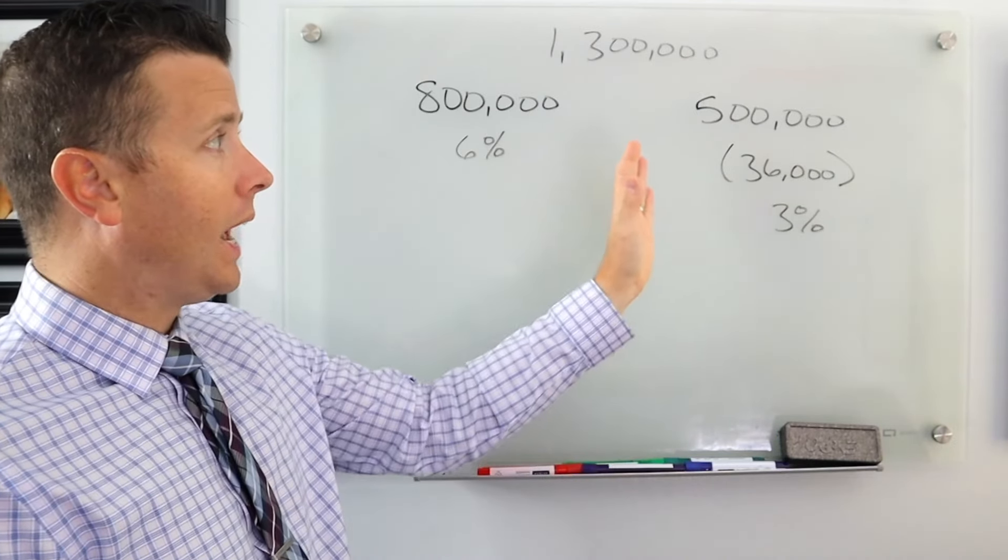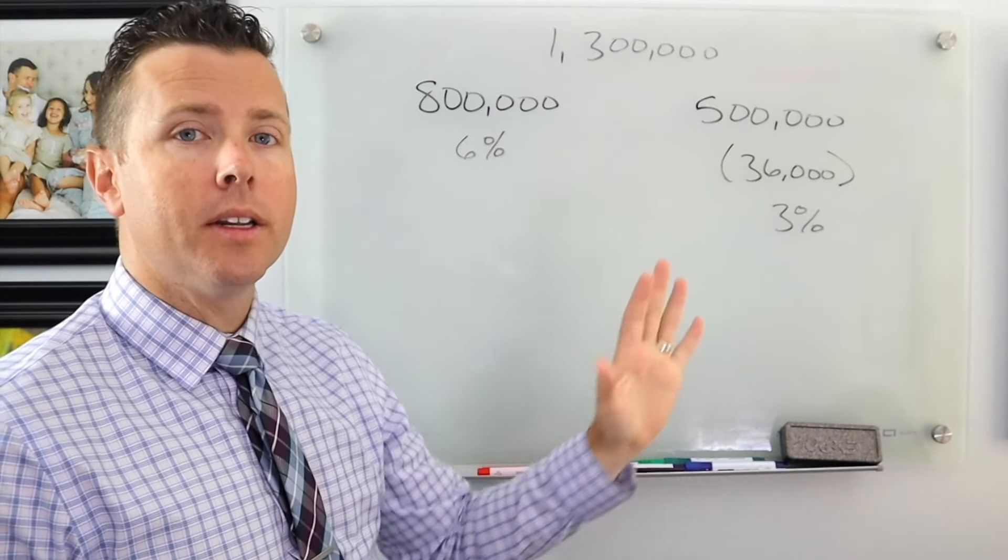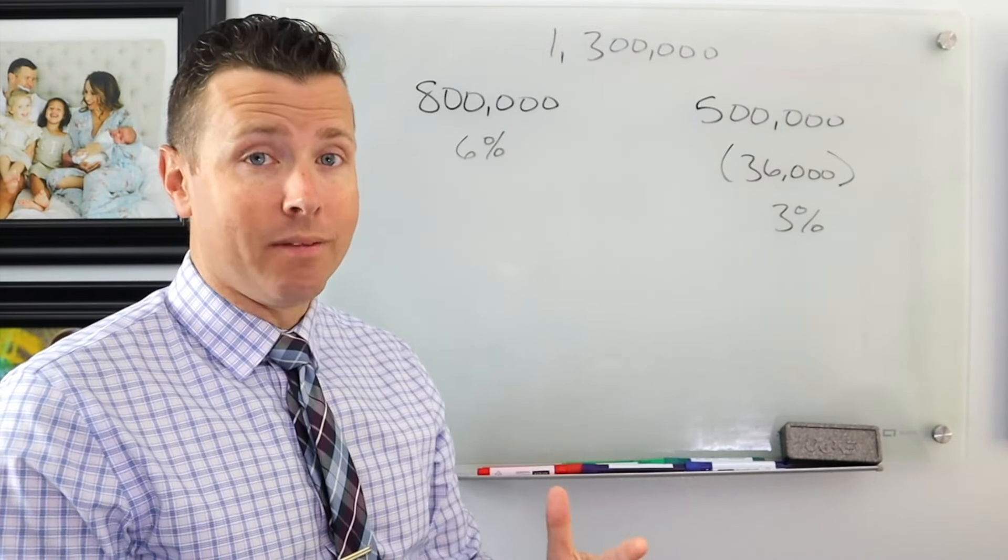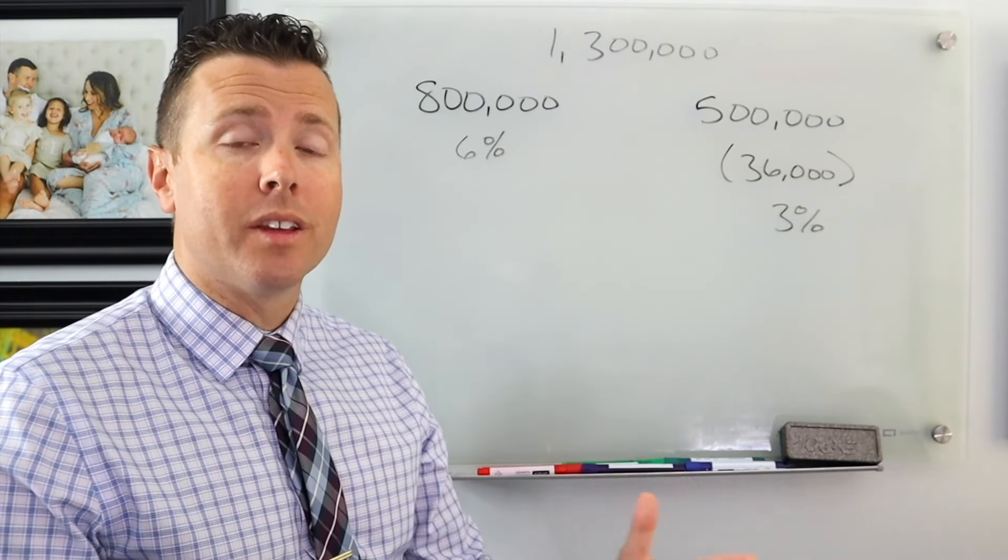how about we take $500,000 of your 1.3 million and we put it in a bucket that is safe or secure or conservative, as conservative as we can get within the market.